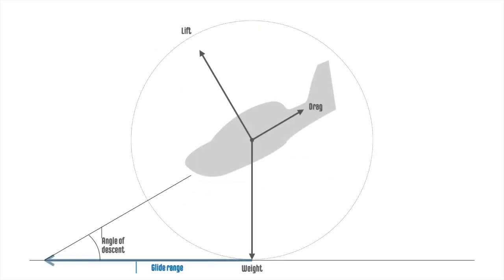The shallowest angle of descent and best glide range is obtained when there is least drag for the lift required. Thus, the ratio of lift to drag is high.